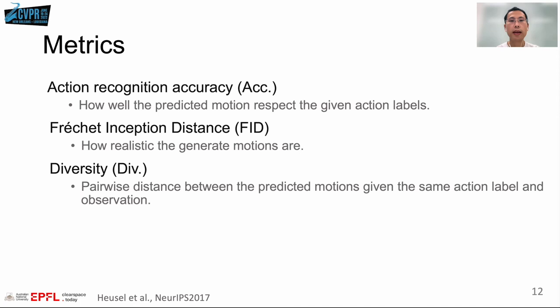We mainly use three metrics: action recognition accuracy, which measures how well the predicted motion respects the given action label; Frechet Inception Distance, which indicates how realistic the generated motions are; and diversity, which is the pairwise distance between the predicted motions, given the same action label and observation.